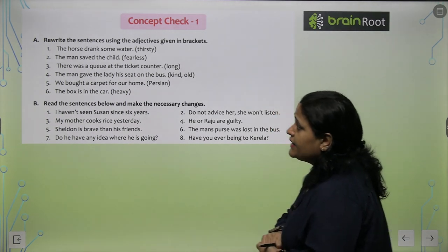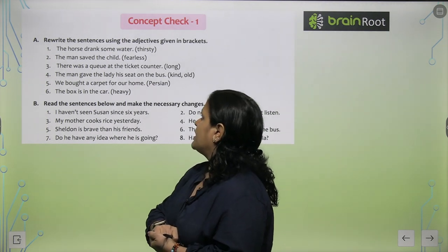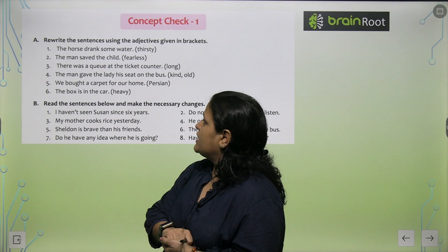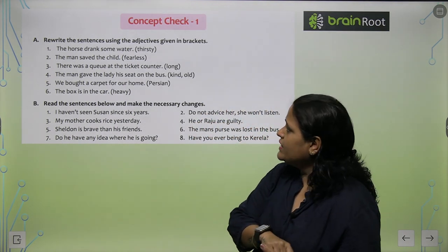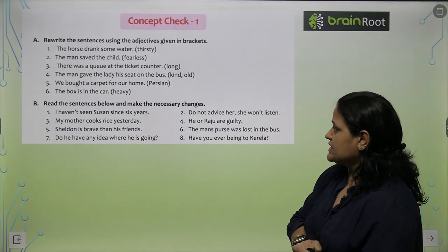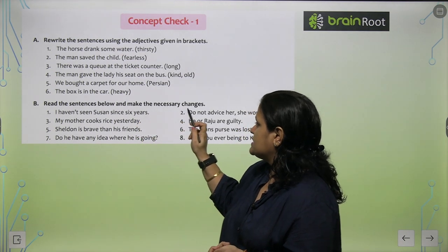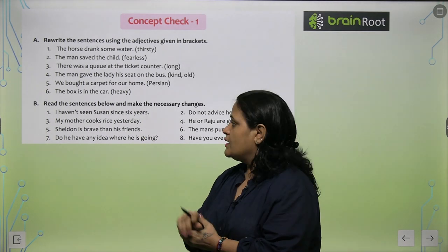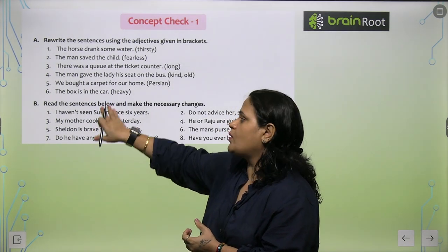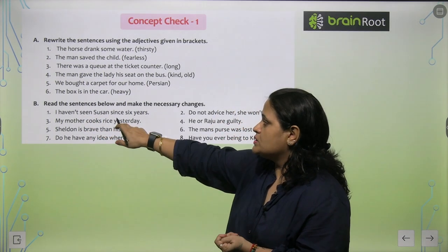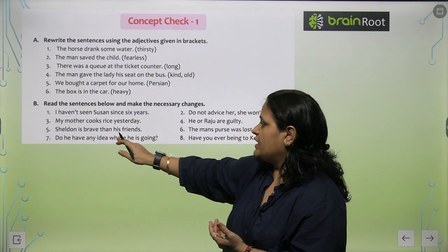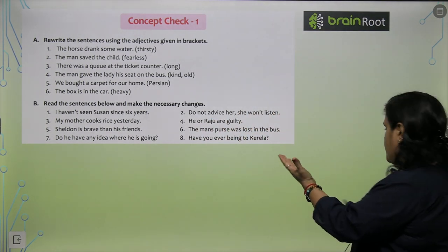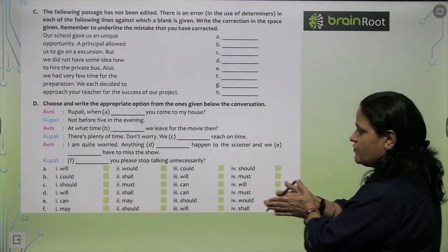So now concept check 1: Rewrite the sentences using the adjectives given in brackets. The horse drank some water, the horse was thirsty. The man saved the child, the man was fearless. So ye aapka concept check ke some exercises. Read the sentences below and make the necessary changes. I haven't seen Susan since 6 years. My mother cooks rice yesterday, so my mother cooked rice yesterday. Sheldon is brave than his friend, Sheldon is more brave than his friend. So is mein kuch kuch corrections aapko karne hai and these all are based on previous chapters, so you can do it yourself very easily.